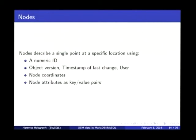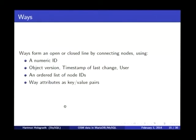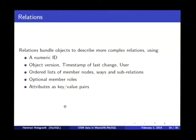We also have relations that can be used to group other things together. All data types can have extra key-value pairs with attribute information — that's true for nodes and for ways. Ways also have an ordered list of all the nodes that form the way, so a way is always a sequence of straight line segments connecting a collection of nodes. There is no such thing as a circular arc in OpenStreetMap. And we have relations that can contain any number of nodes, ways, and other relations.